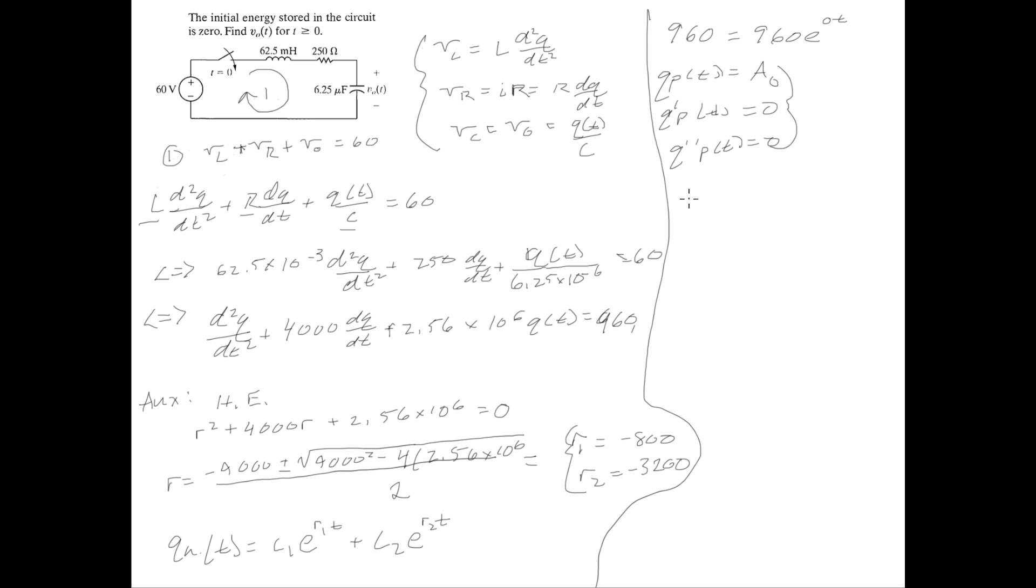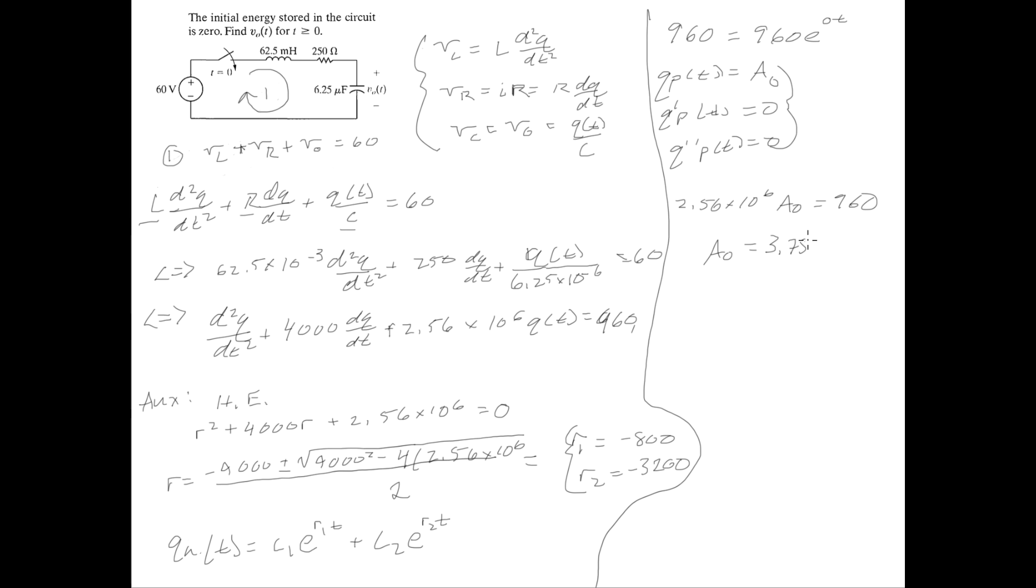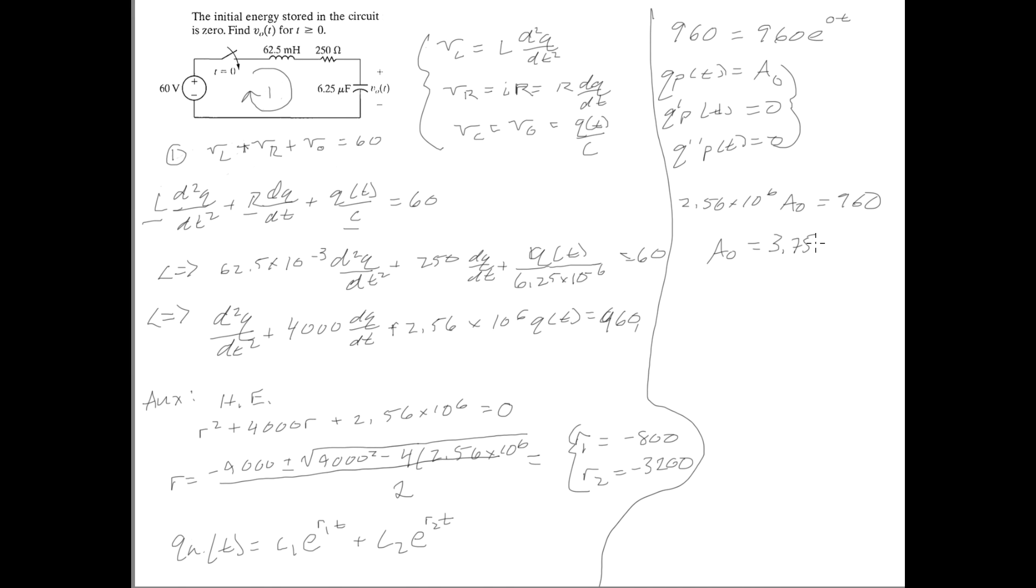In the end, we just have 2.56 times 10^6 Q of T is equal to 960. If you divide, you'll find that A0 is equal to 3.75 times 10^-4. And that's it.